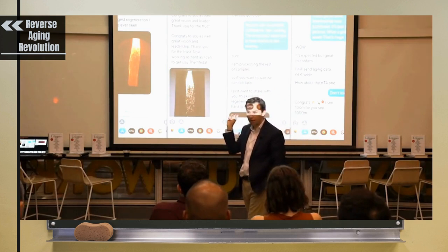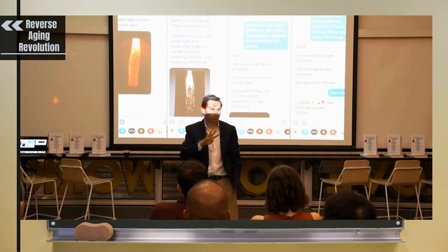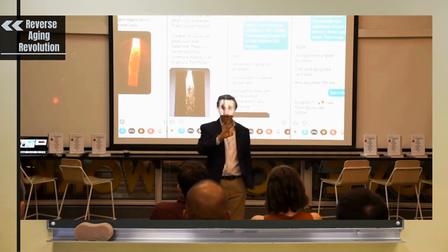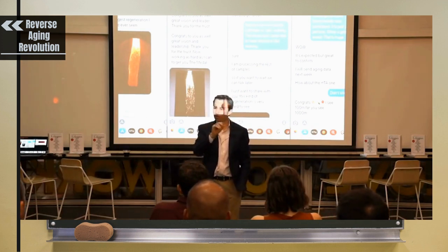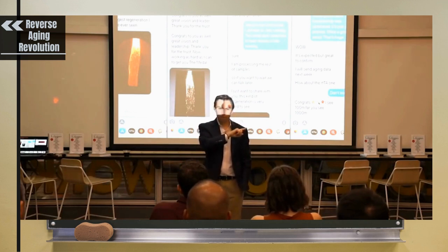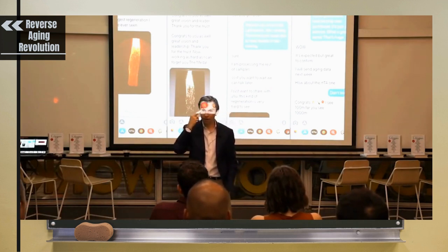He put the Yamanaka factors, not all four of them. He found that three were safe and effective. You know the one at the end, the M, Nick? He left that off, because that causes cancer. That's known to be a problem. But OSK put into the back of the eye, regenerated the optic nerve in these mice.